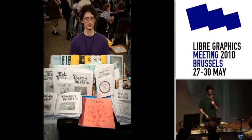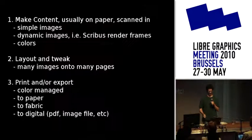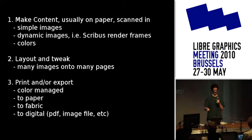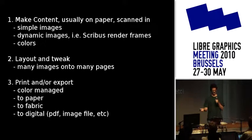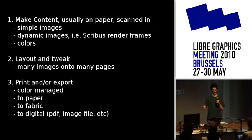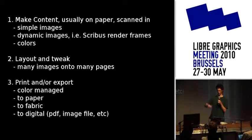Here's me in my natural environment with various books at the Stumptown Comics Fest in the United States. Generally, the process is: you make content — for me typically on paper, then scan it in as simple images. For the future, I want to be able to do more dynamic images, for instance Scribus render frames — something the program cannot automatically do but something else can, so you just say to that other thing 'do this' and then drag it in.